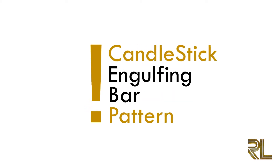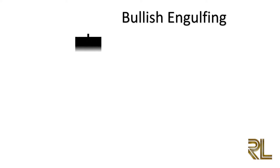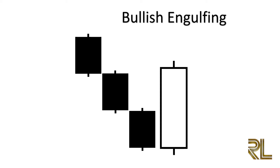The first candlestick pattern we are going to decipher is the engulfing bar pattern. The engulfing bar is formed when it fully engulfs the previous candle. It can engulf more than one previous candle, but at least one candle must be fully consumed. There are two types: bearish engulfing bar and bullish engulfing bar. Bullish engulfing bars are found in a preceding downtrend — a short black candle followed by a longer bullish white candle.